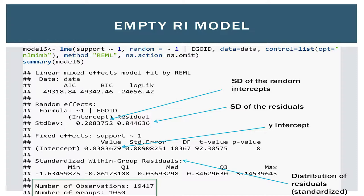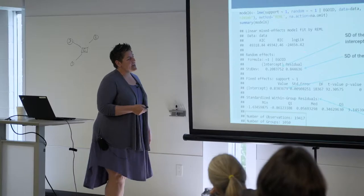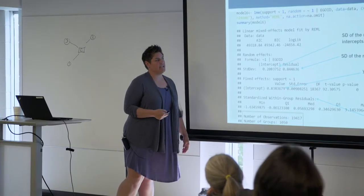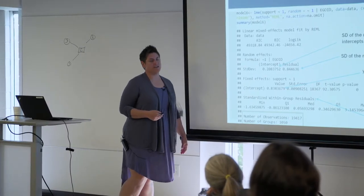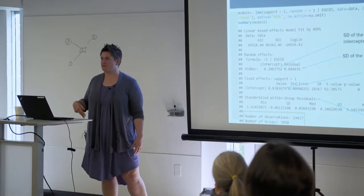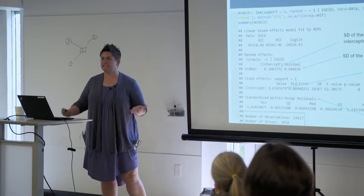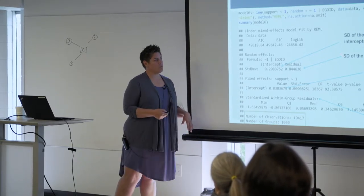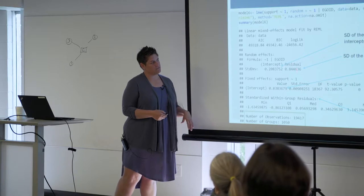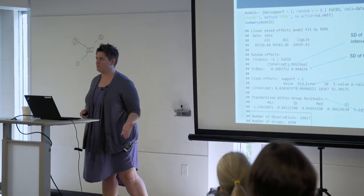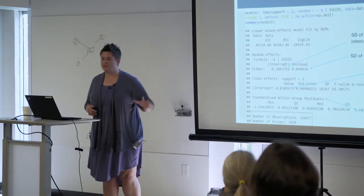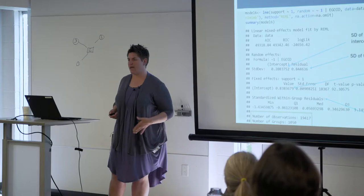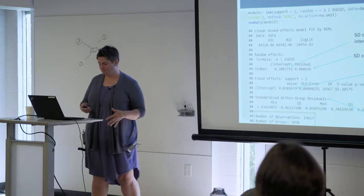It's always good to start with a null model — meaning no independent variables — because that tells you about your baseline level of variation at the different levels. So what am I dealing with in terms of dependency? How much is there? Do we see more variation within or more variation between? Then we can check and see how this changes as we add variables to the model.